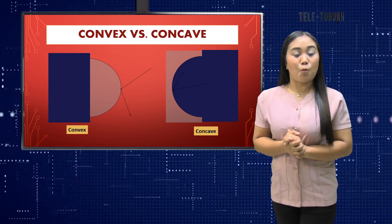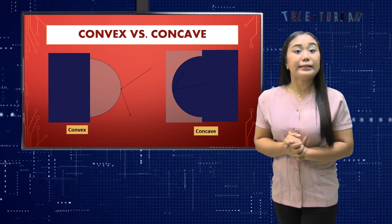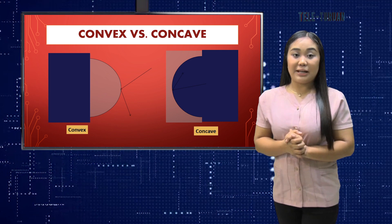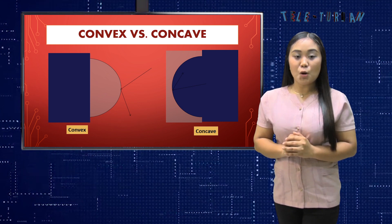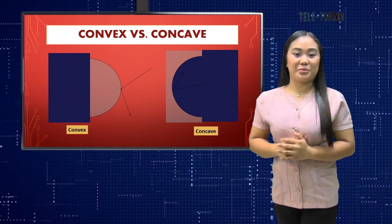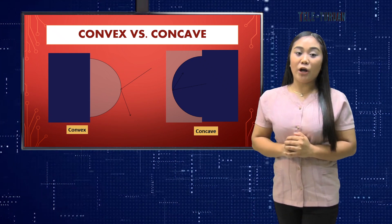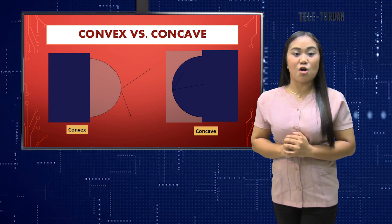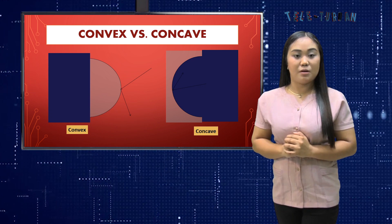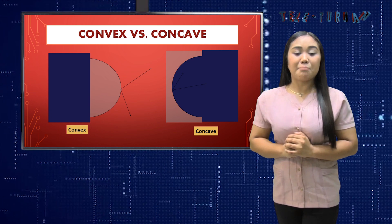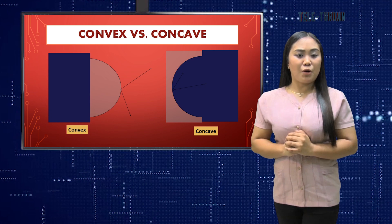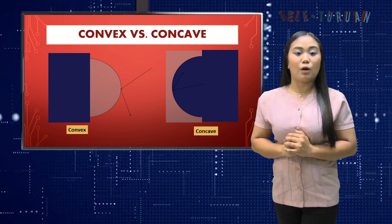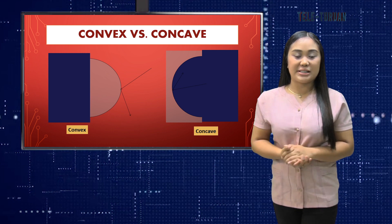We consider a point on the object, usually the tip, then draw incident and reflected rays. We need to draw at least two of the rays. The point where the reflected rays intersect is the location of the image of the tip of the object. In like manner, the image of other points of an object may be located and the image of the whole body can be traced.